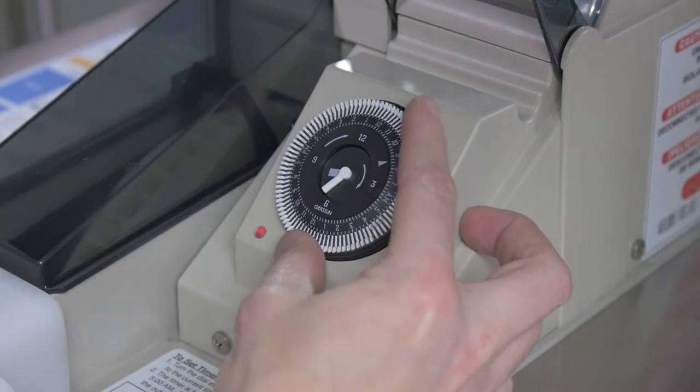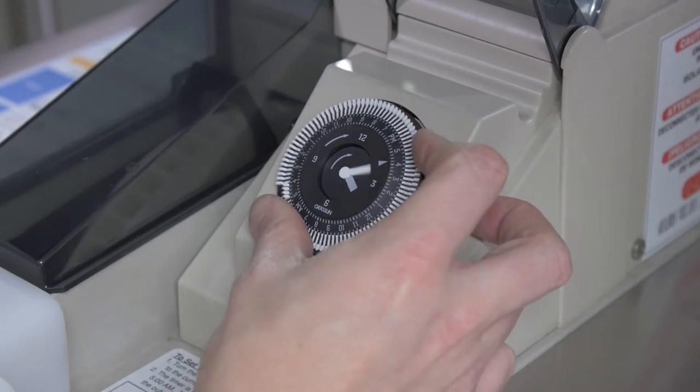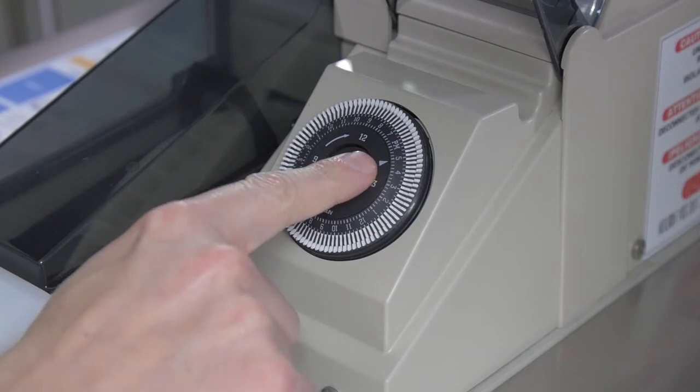To set the dial to current time, slowly rotate the dial clockwise until the current hour is aligned with the triangle printed on the dial between 12 and 3.